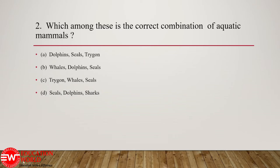The second question: which among these is the correct combination of aquatic mammals? We know that Mammalia is a diverse group and on the basis of prevalence, mammals can be categorized as aquatic mammals, arboreal mammals, and flying mammals. In the aquatic mammals, we can give examples such as whale, dolphin, and seal.